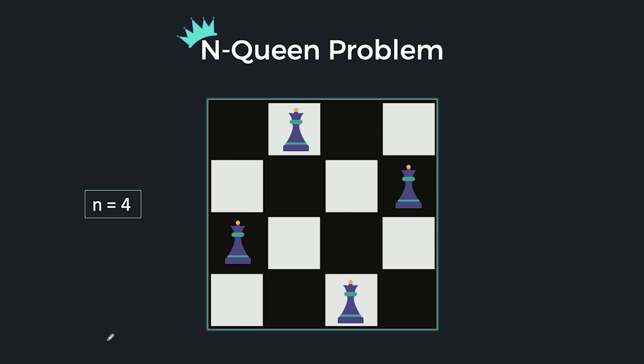Now we will see how we arrived at this solution. We use recursion here, and we will also use backtracking. We will try to place a queen in the first row, and then move to the next row.